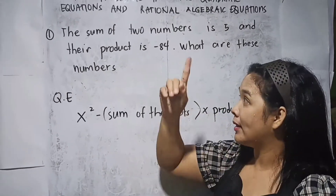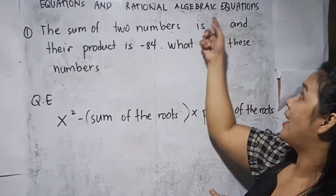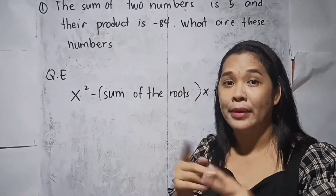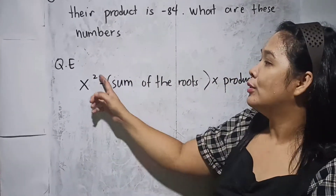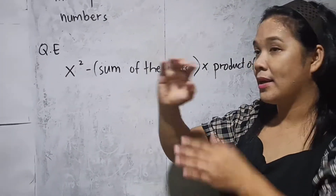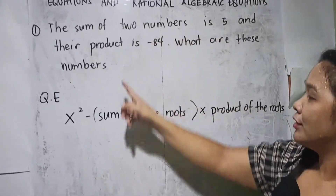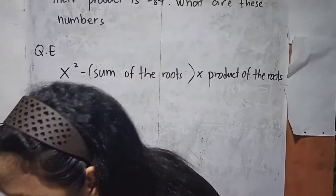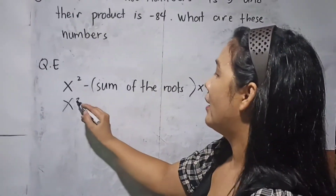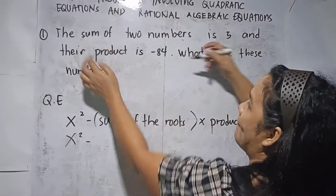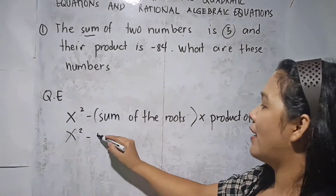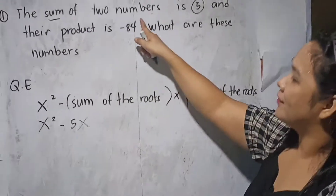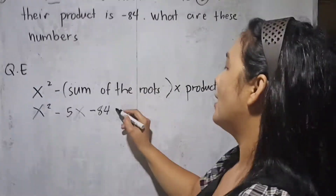Example, problem number 1: The sum of two numbers is 5 and their product is negative 84. What are the numbers? In quadratic equations, we use the formula: x squared minus (sum of roots) times x plus (product of roots) equals zero. So, substituting: x squared minus 5x plus (negative 84) equals 0, giving us x squared minus 5x minus 84 equals 0.